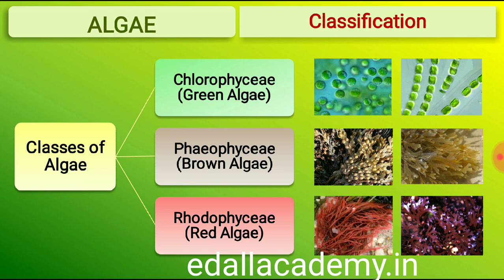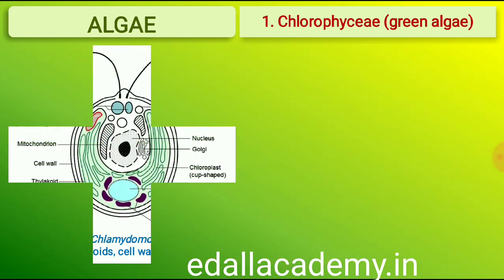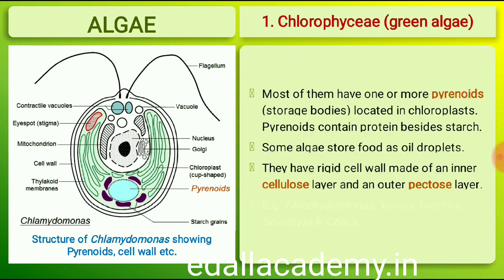The members of Chlorophyceae are commonly called green algae. The plant body may be unicellular, colonial or filamentous. They are usually grass-green due to the dominance of pigments chlorophyll-a and chlorophyll-b. The pigments are localized in definite chloroplasts, which may be discoid, plate-like, reticulate, cup-shaped, spiral or ribbon-shaped in different species. Most members have one or more storage bodies called pyrenoids located in the chloroplasts. Pyrenoids contain protein besides starch.